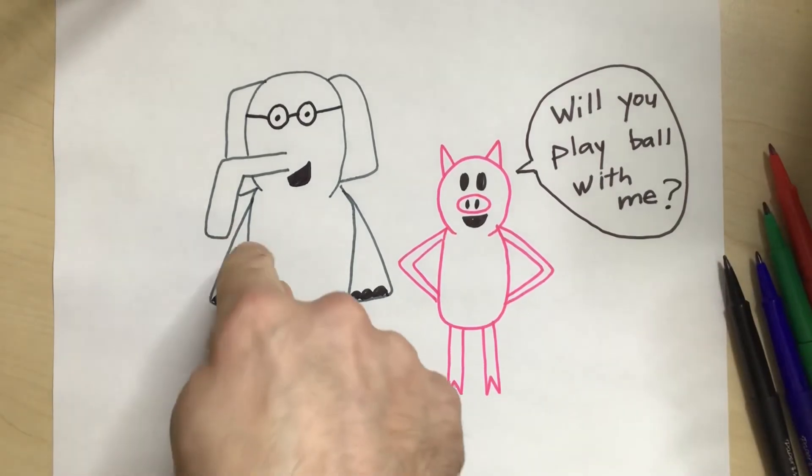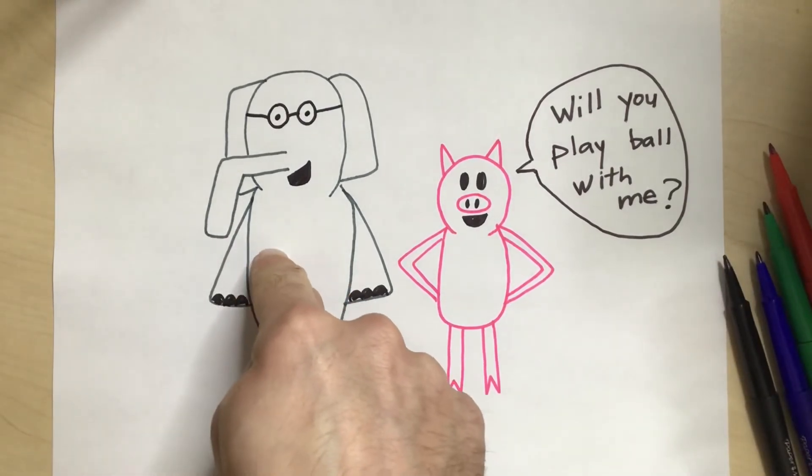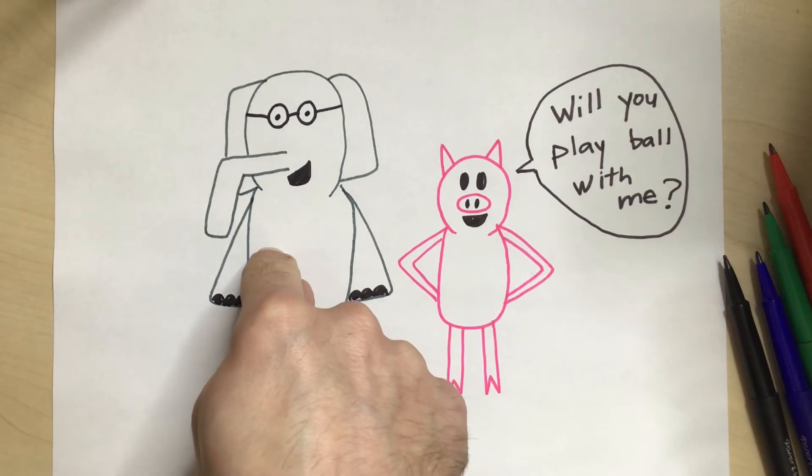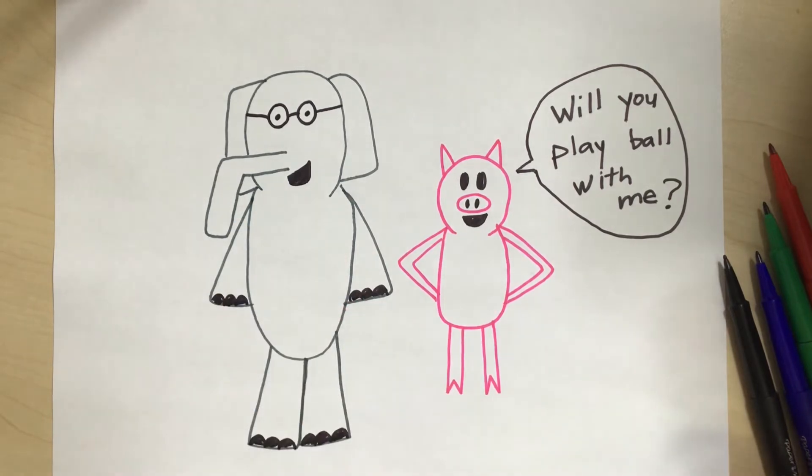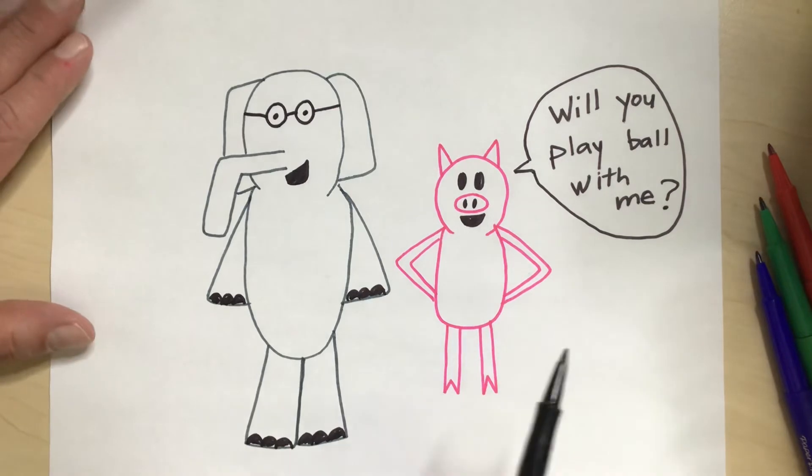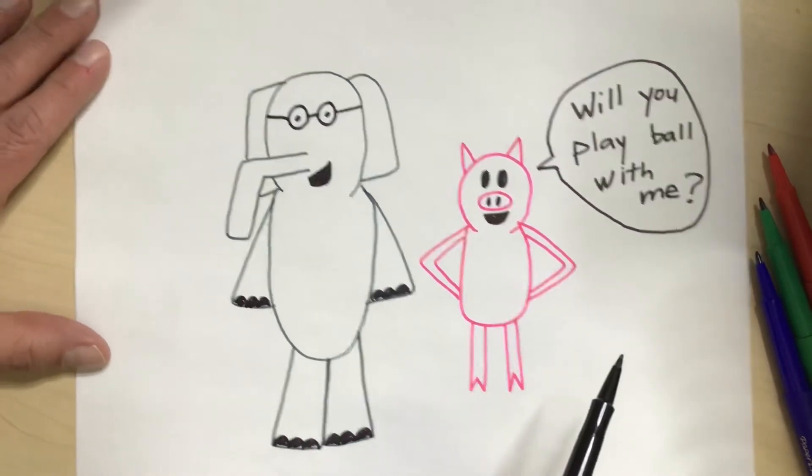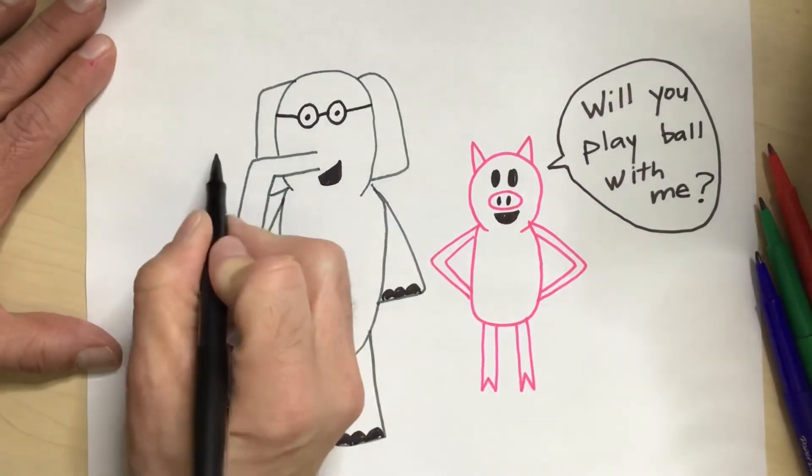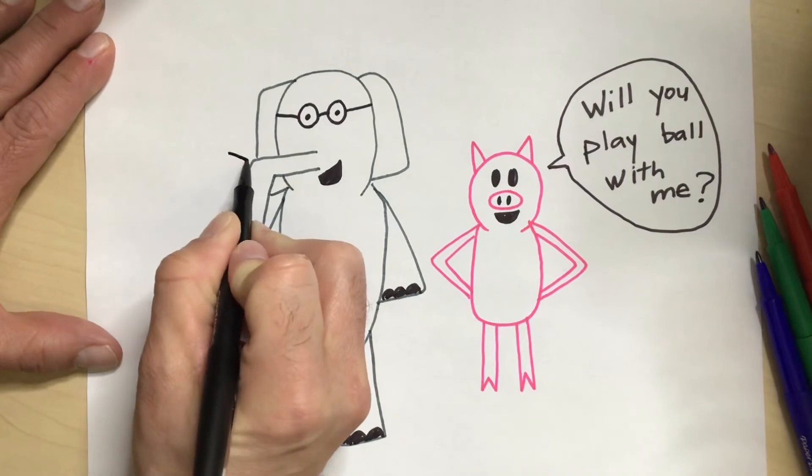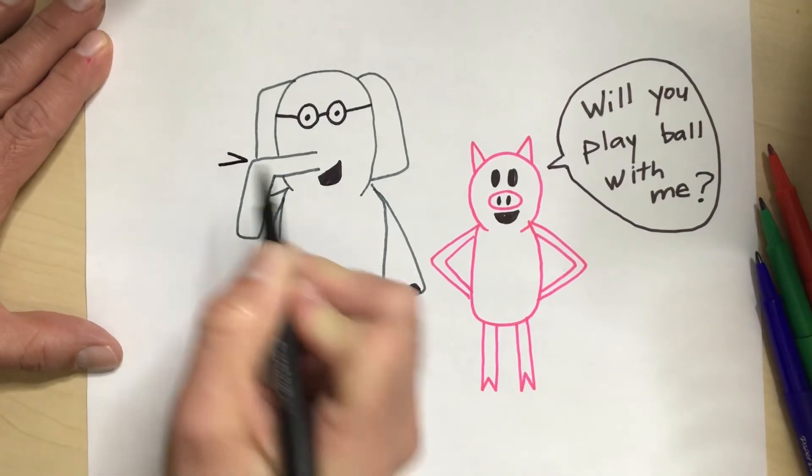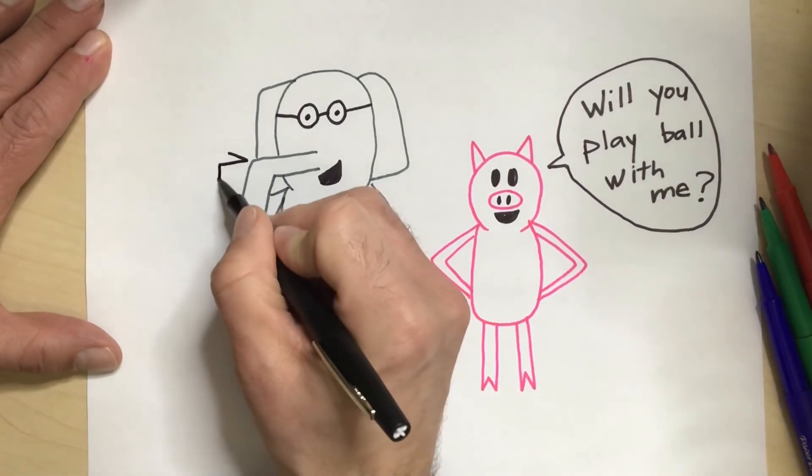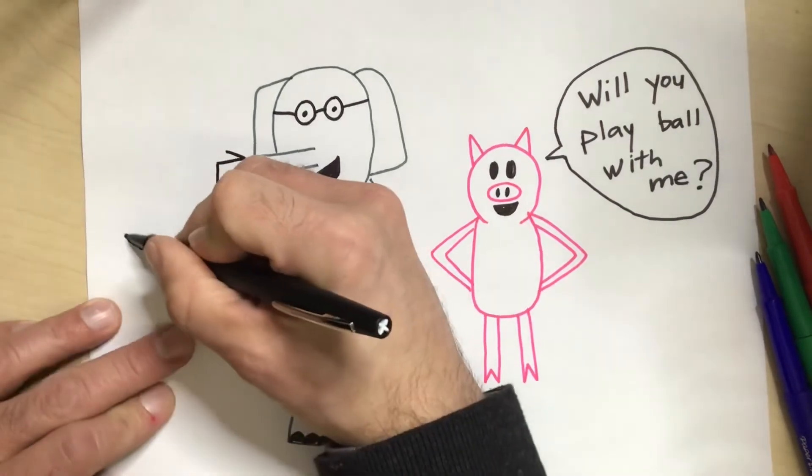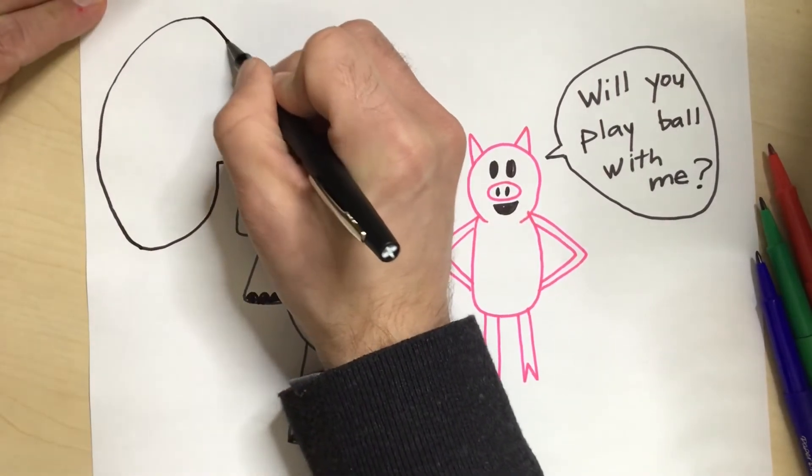Then what could Gerald say? Oh, Gerald probably for sure would want to play with his best friend, Piggy. So we're going to put a speech bubble here, little triangle towards Gerald so we know Gerald's talking. And then enough space so that we're able to write our words.